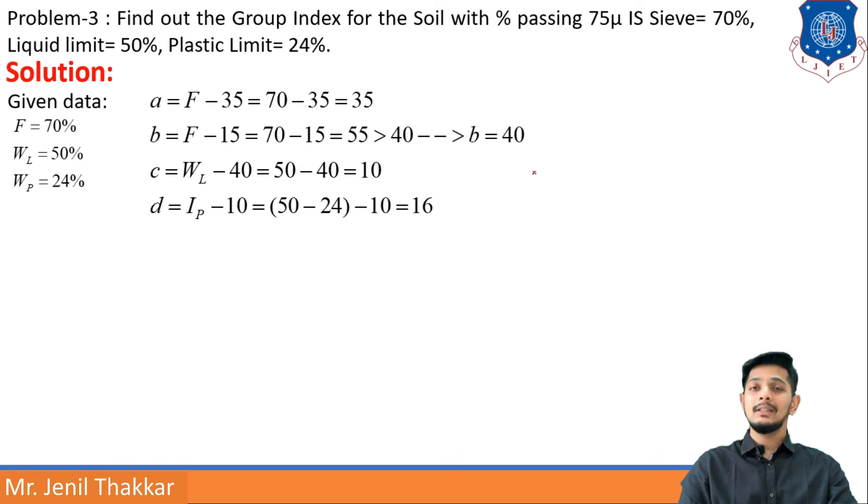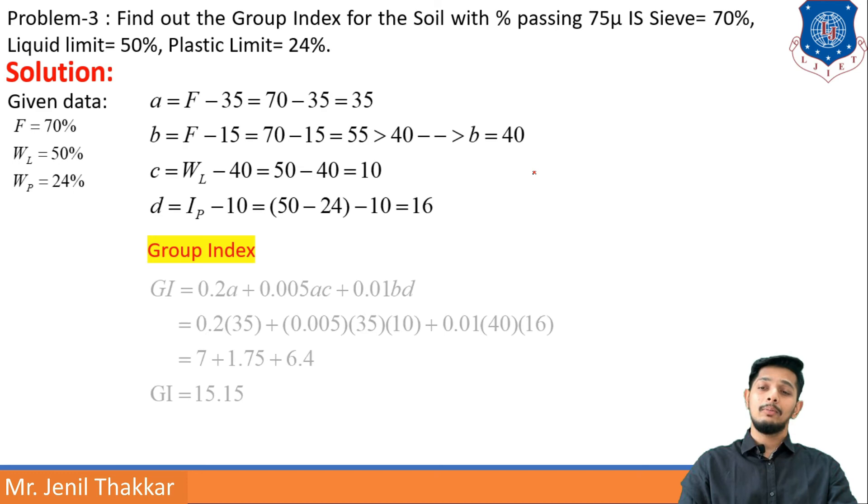GI formula can be put: that is 0.2A + 0.005AC + 0.01BD. Putting all the values in this equation, I can find out GI as 15.50.